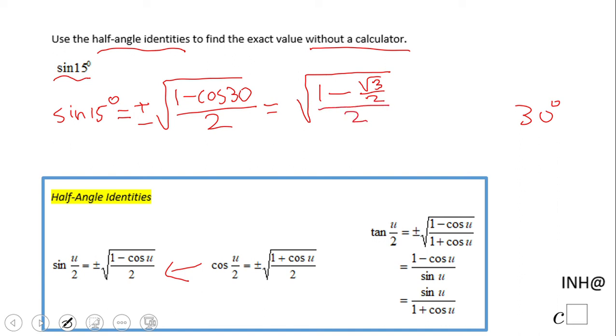And we have 1 minus, and now cosine of 30, that will be square root of 3 over 2. And from here you choose nothing else than try to simplify this expression. So let's see how we do that.